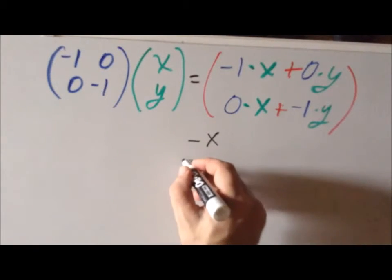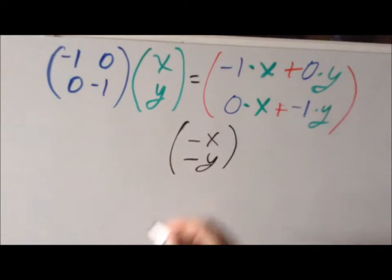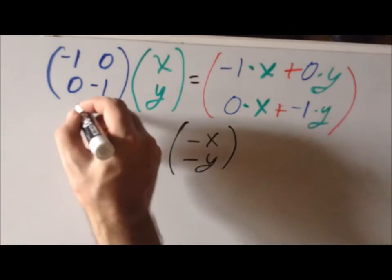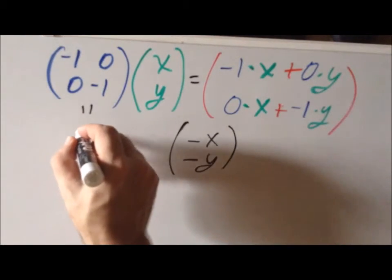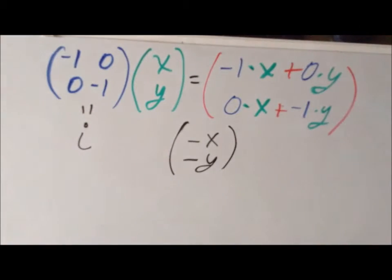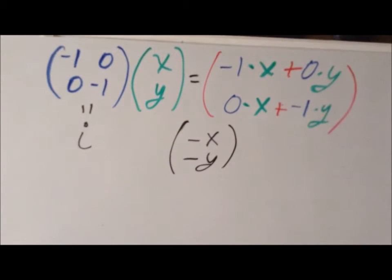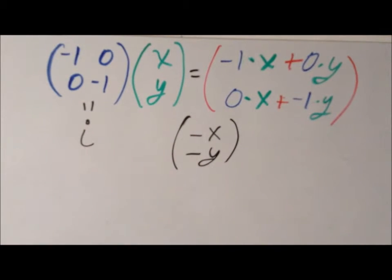While it may not be obvious in two dimensions, if we do the same operation in three dimensions, we notice this is the matrix representation of the inversion operation I. The matrix for inversion looks very much like the identity matrix, except it has minus ones along the diagonal instead of positive ones. And since it has a large number of zeros, the matrix multiplication is somewhat easier to follow than more complicated matrices.